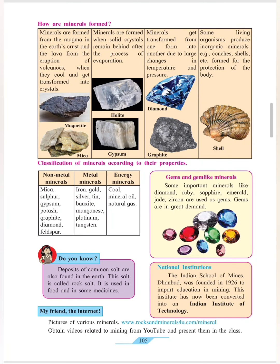How are minerals formed? Minerals are formed from the magma in the earth's crust and the lava from the eruption of volcanoes when they cool and get transformed into crystals. Magnetite and mica are some examples of minerals which are formed with the help of magma and lava from the earth's crust.